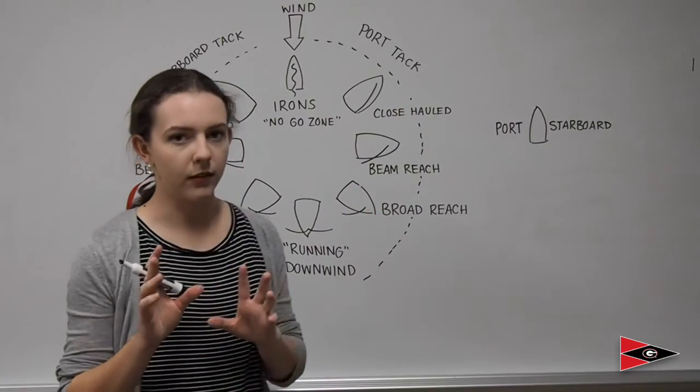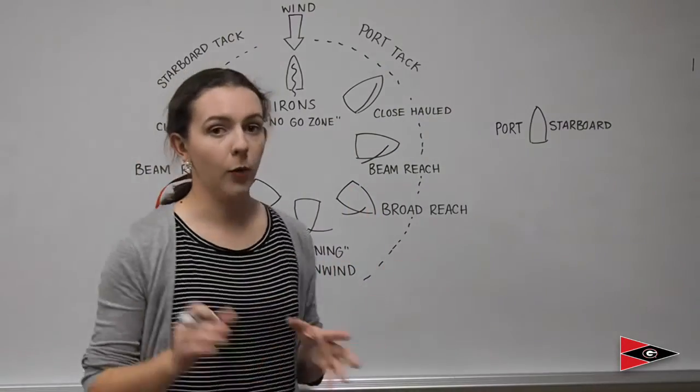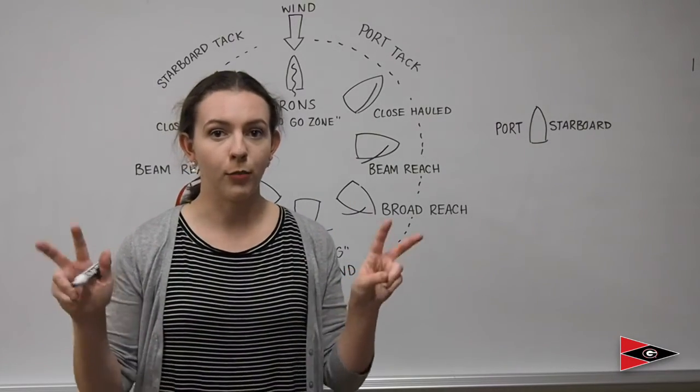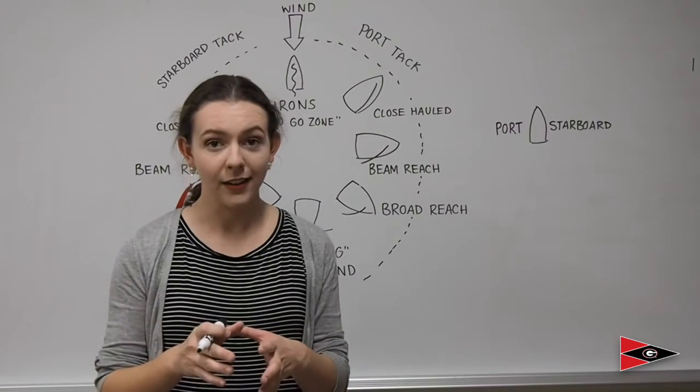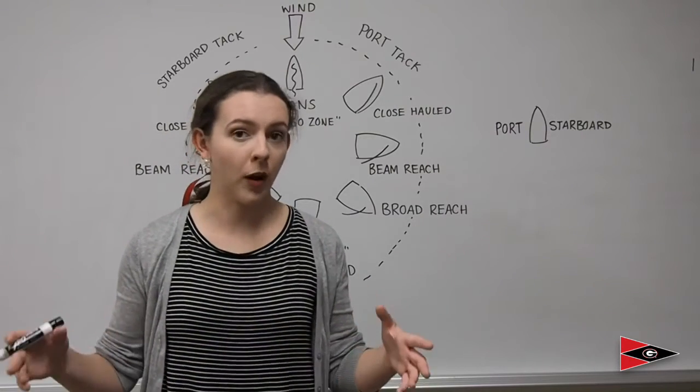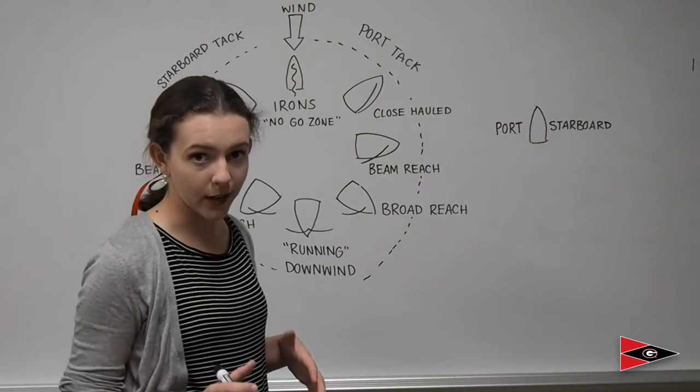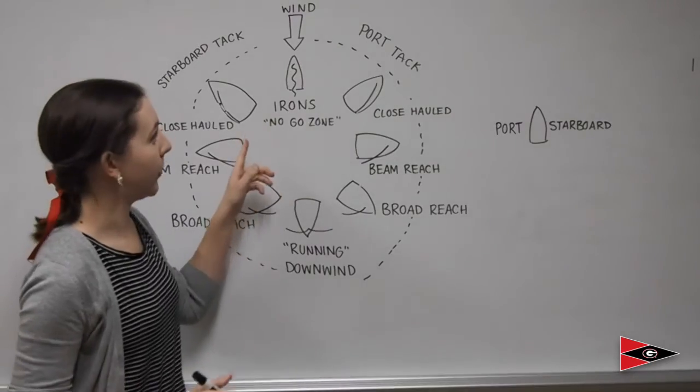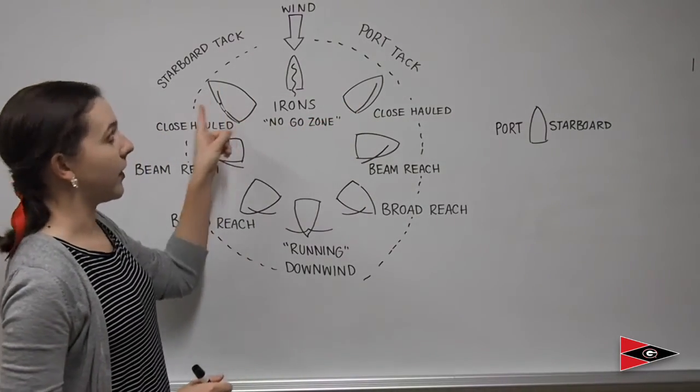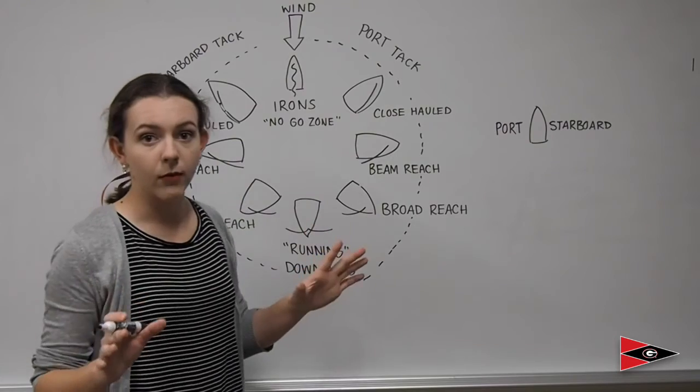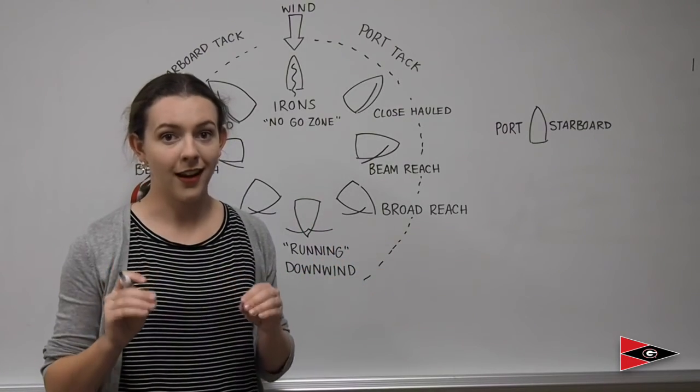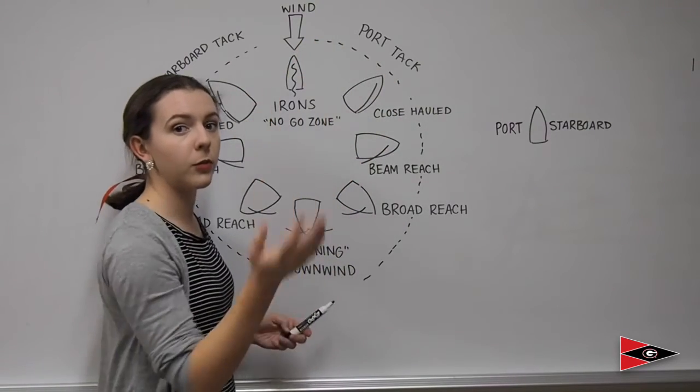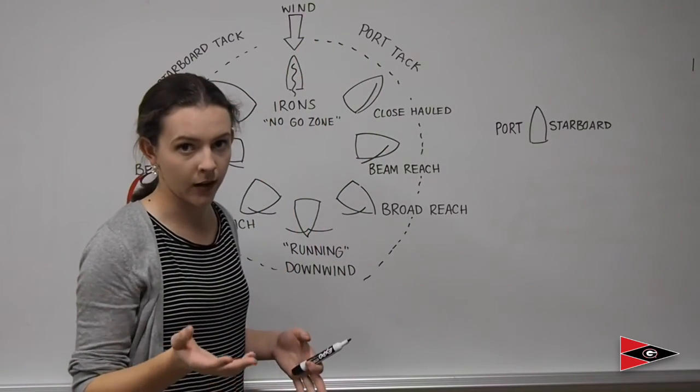I want to make one thing clear because this gets a little hairy sometimes. Your boat can be on either a port tack or a starboard tack. There is also such thing as the process of tacking. Tacking is a verb, a tack is an adjective to describe your boat. The process of tacking is going from one close-hauled on one side to the other close-hauled, so it can be going from a port tack close-hauled to a starboard tack close-hauled, or vice versa. But the process is called a tack. In order to get from one side to the other, you will need to put your boat through irons. So you will pass through irons, but you don't want to stay in irons.